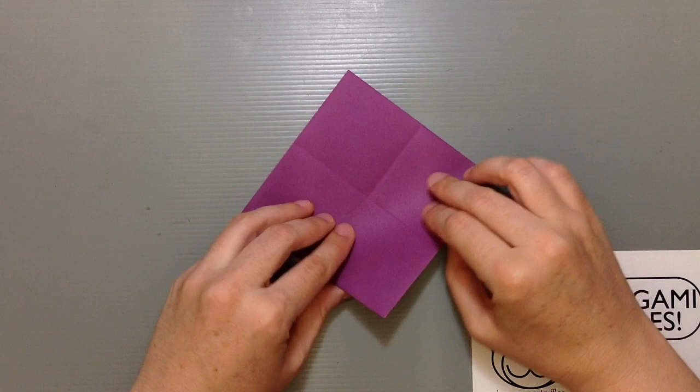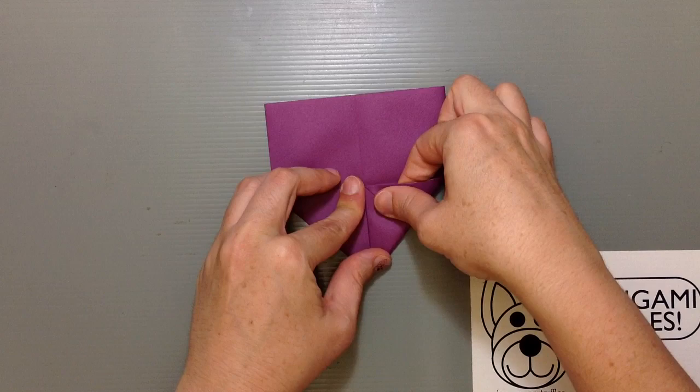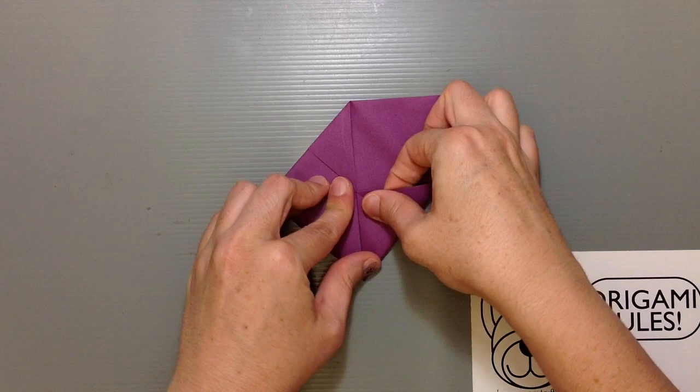Flip it over and do the same thing going on this side now. Take care when you fold here because you don't want to accidentally snag on the pocket that you see right here. It's easy when you're kind of doing the creasing here that you can accidentally snag on that.